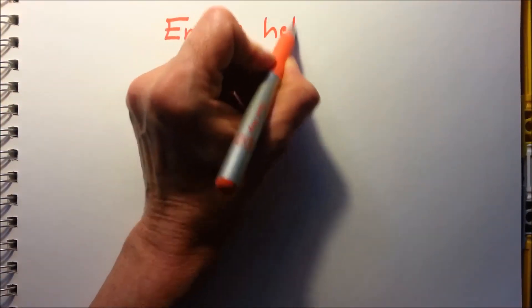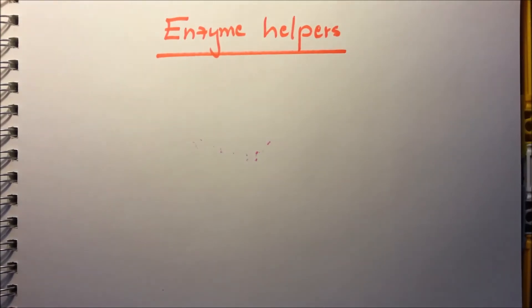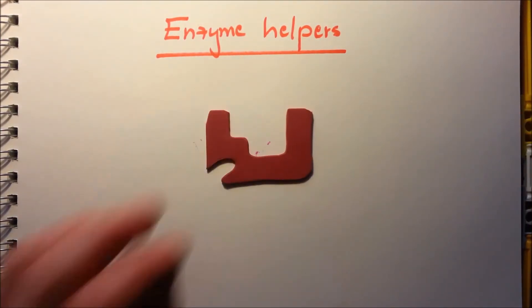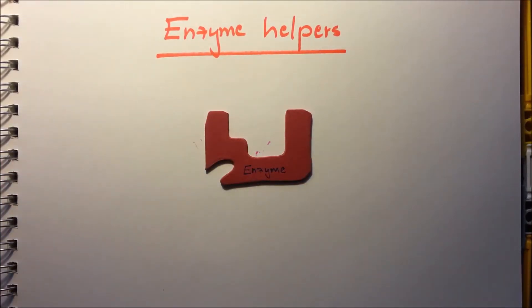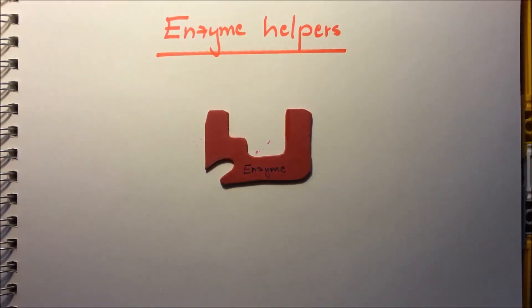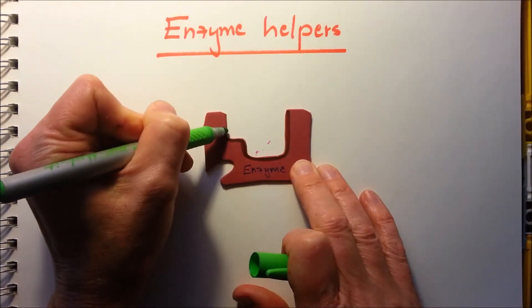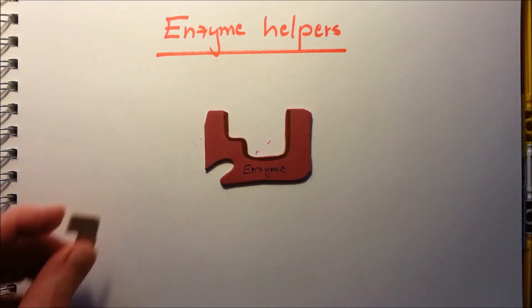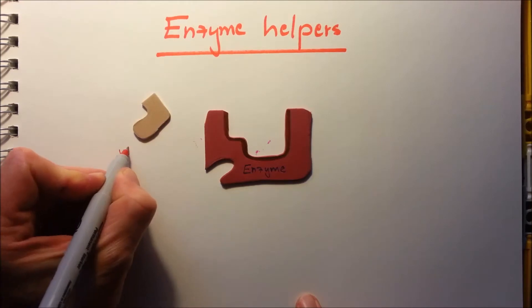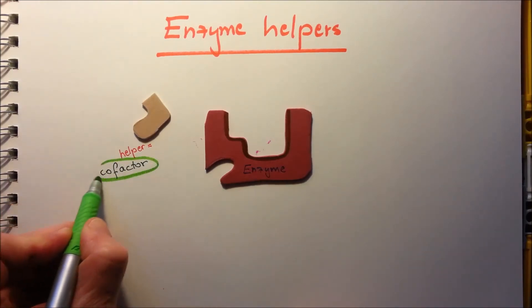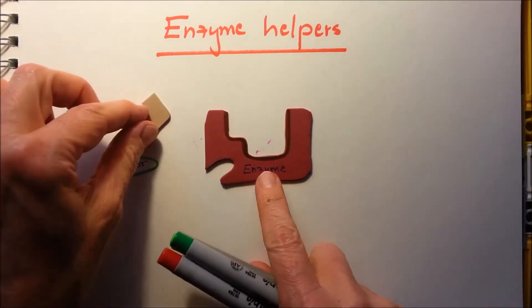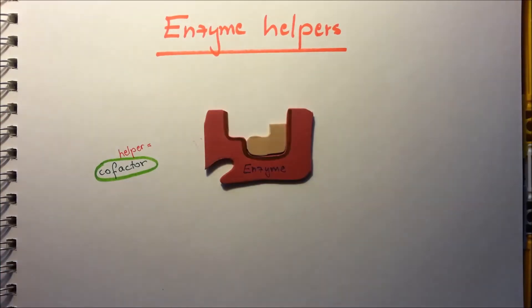Many enzymes work with helpers. This is an enzyme with its active site. The helper, or it's called the cofactor, binds to the active site and functions in the catalysis, so in the chemical reaction it will take an active part also.